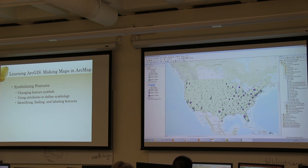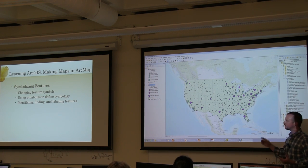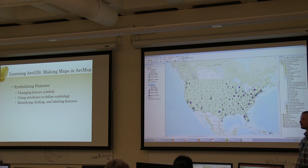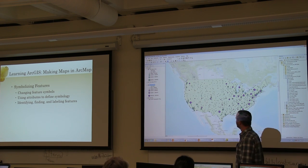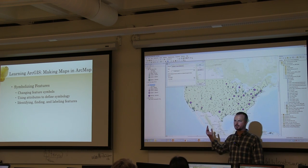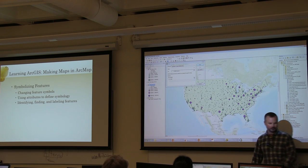Another useful tool is the Find tool. Here you can search through all the attributes to locate and identify something in your map. The Find tool is the pair of binoculars up at the top. Let's use it to find a city — Washington D.C. I'm going to restrict it to the USA major cities layer so it's not going to look in states and get confused, then type Washington and see what comes up.